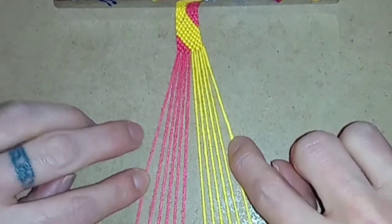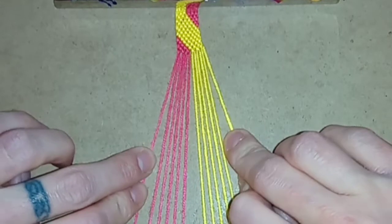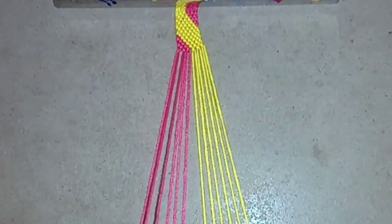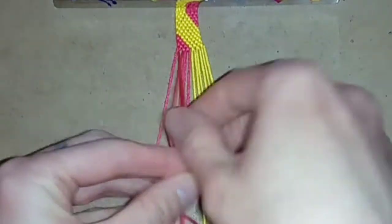For your second row where in section one you're ignoring the first and last threads, this time you're also going to ignore the two threads in the center. Starting with thread two and three you want to do a forward knot.